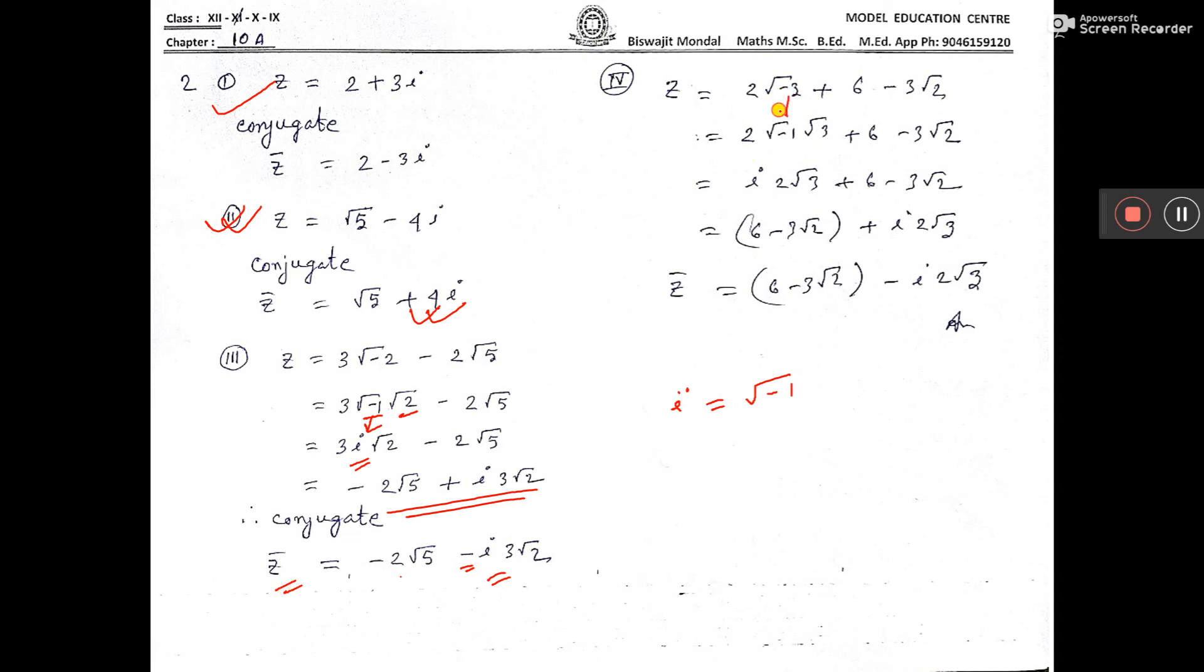Here also, see root over minus 1, we can write here. Here you write i. So this is the real part and this is the imaginary part. Next line, you write this is a and this is i b, and its conjugate will be before i plus sign will be minus. So that's all.